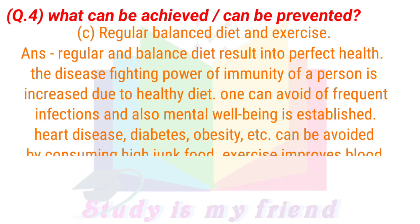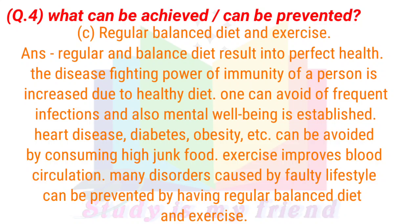C. Regular balanced diet and exercise. Answer: Regular balanced diet results in perfect health. The disease-fighting power or immunity of a person is increased due to a healthy diet. One can avoid frequent infections and mental well-being is established. Heart disease, diabetes, obesity, etc. can be avoided by not consuming high-calorie junk food. Exercise improves blood circulation. Many disorders caused by faulty lifestyle can be prevented by having a regular balanced diet and exercise.